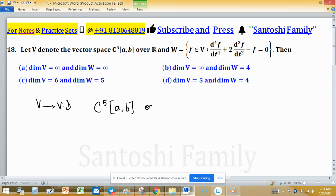It means all five times continuous functions. Which type of function will come in this vector space V? e raised to the power ax because it is infinitely times differentiable. You can differentiate this function as many as you want.